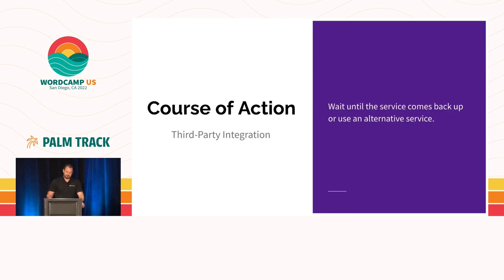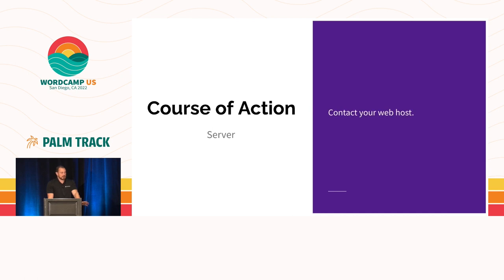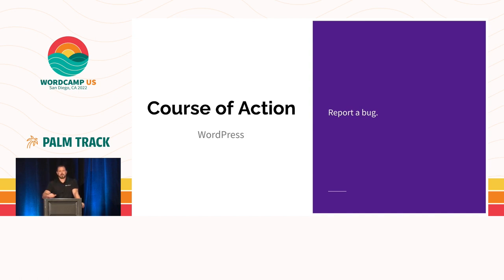For third-party integrations, it's kind of a sit-and-wait if the service is down, or you can use an alternative service. For the server, that's really just going to be contacting and reaching out to your web host. And then if you do happen to run into an issue with WordPress itself, it's important to report that. Developers know how to report a bug through the official Trac system. But typically, if you just go to WordPress support and say you're running into this issue, there are general places you can post and someone should be able to help you get a report filed for that.